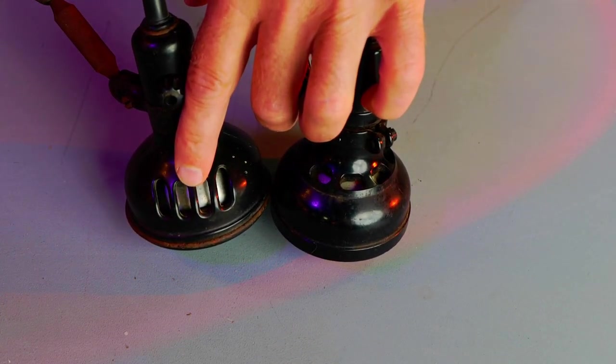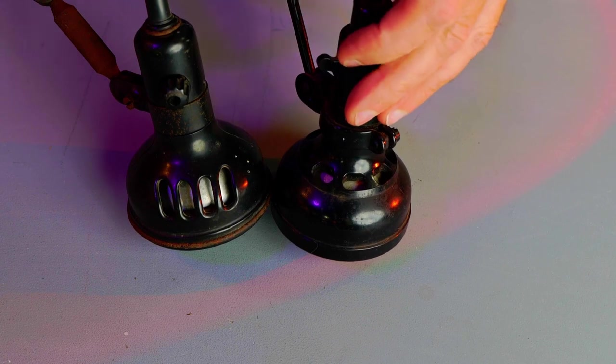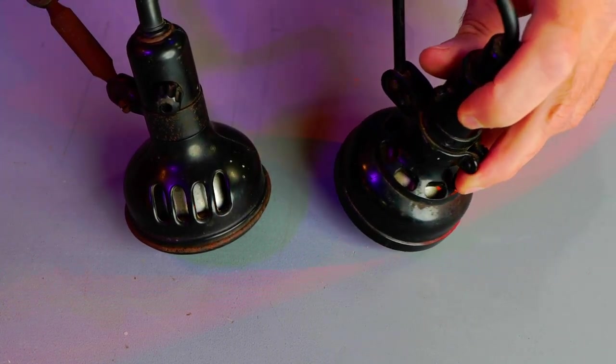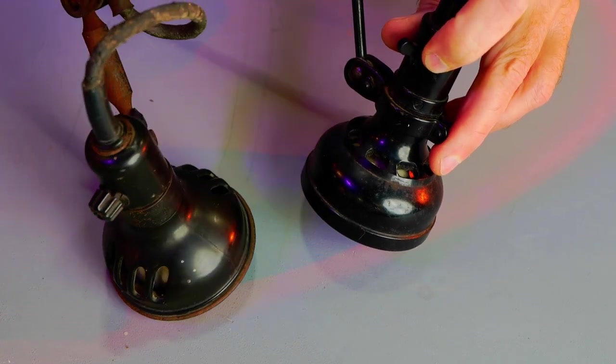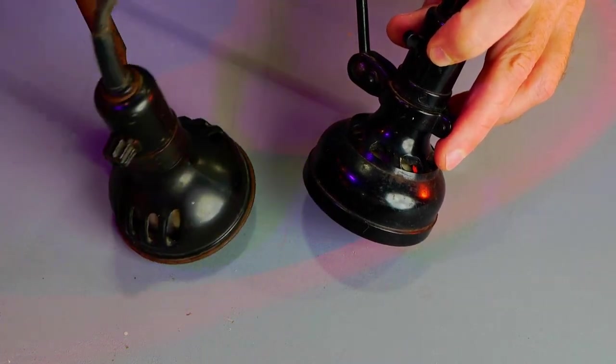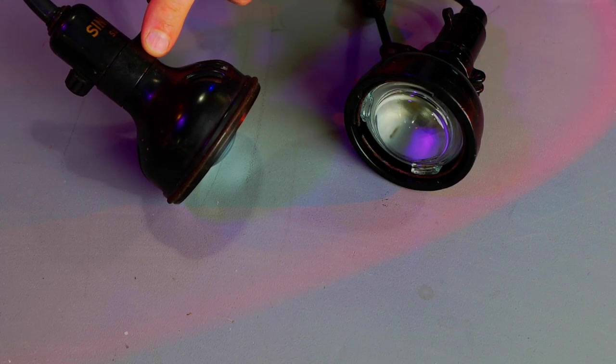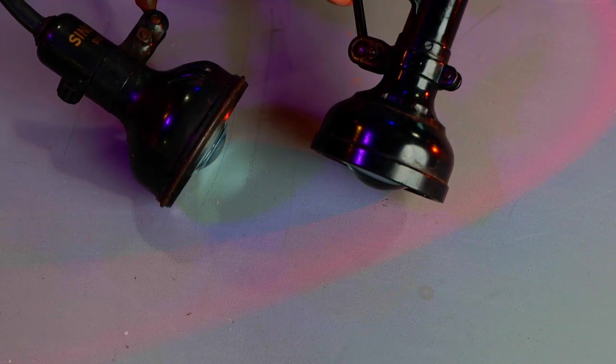The venting on these lights is different. So the SLF3 has this style of vent, and the SLF2 has a more of a radial pattern that goes all the way around. The SLF3 just has two sides of venting.